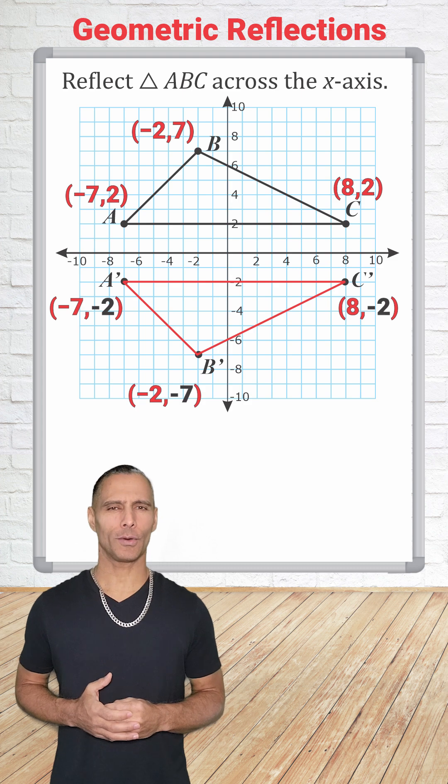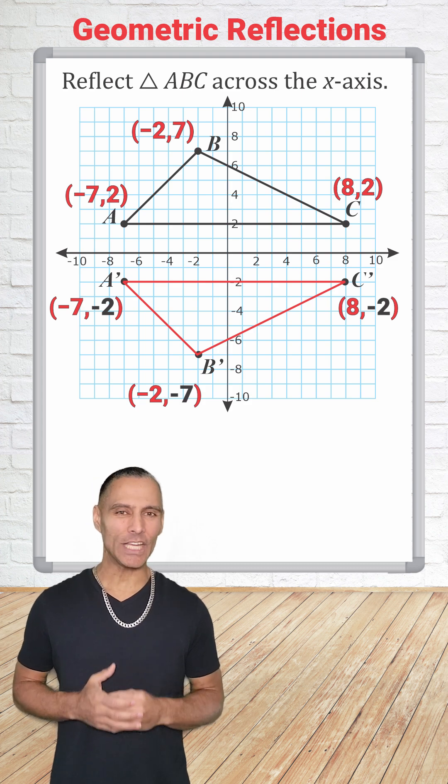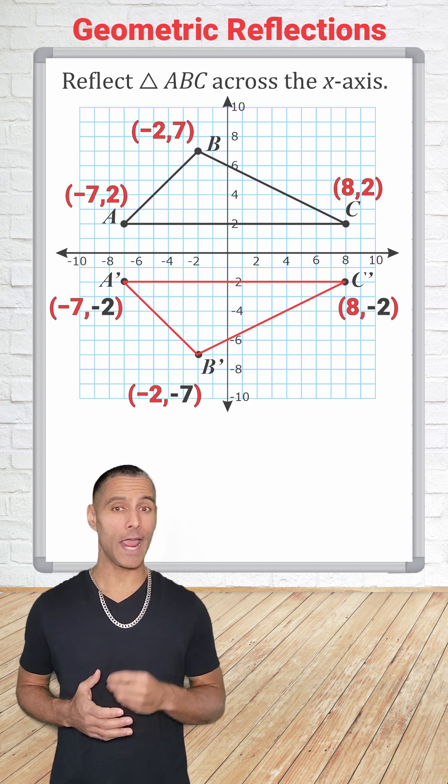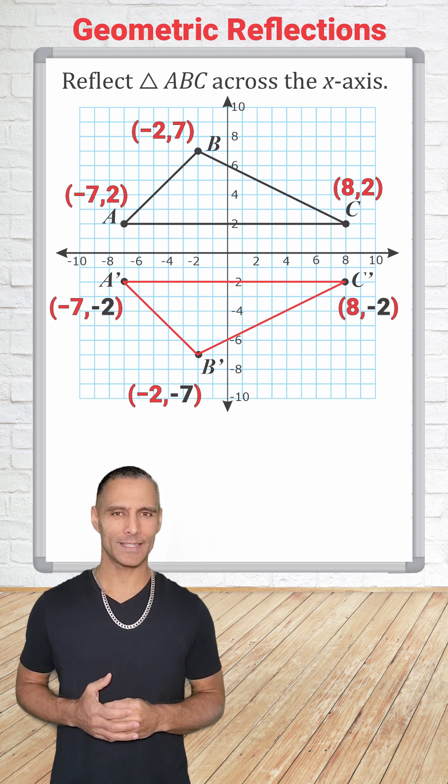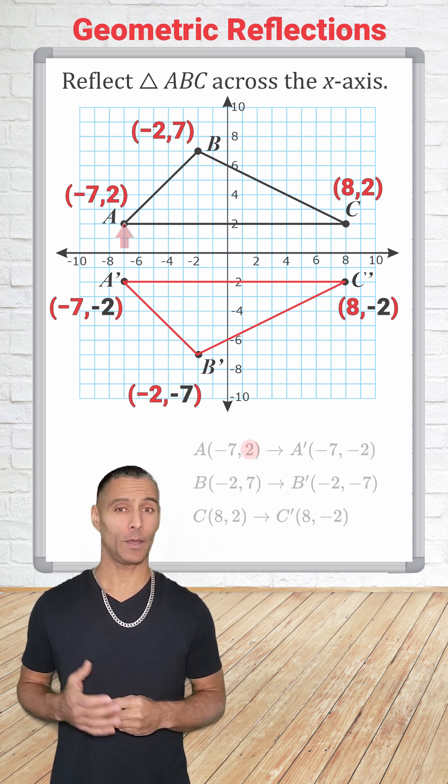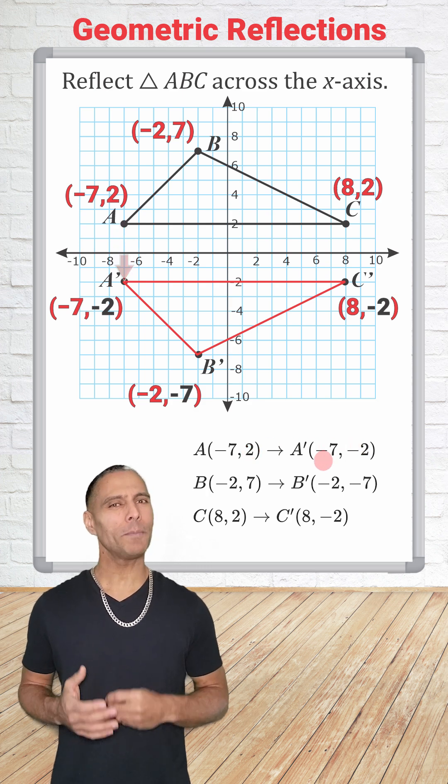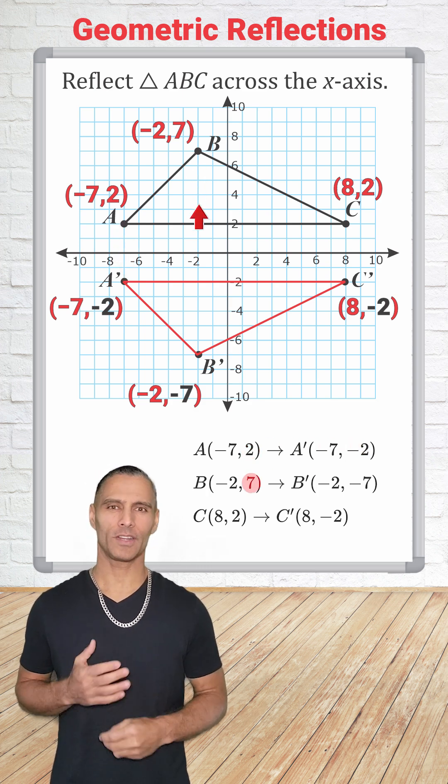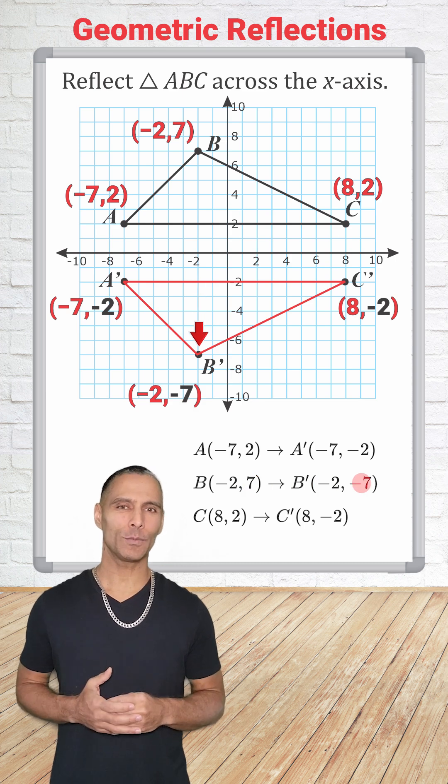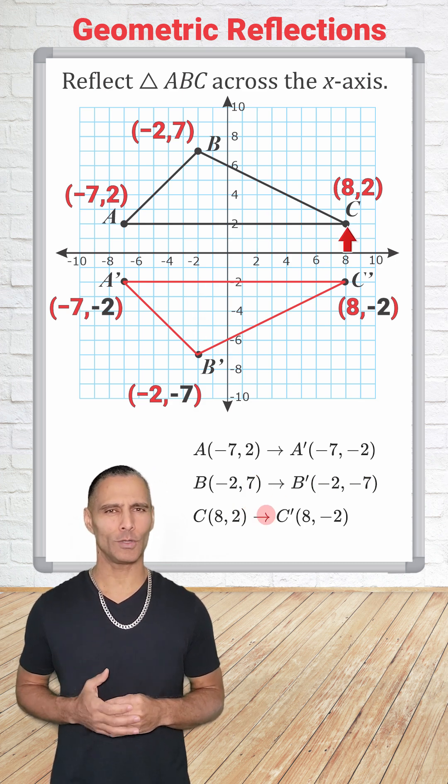Another thing that we should notice about our reflection is that each point of the original figure and the new figure are the same distance to the x-axis. Point A was 2 units above the x-axis, now it is 2 units below. Point B was 7 units above, now it is 7 units below. And point C was 2 units above, and now it is 2 units below.